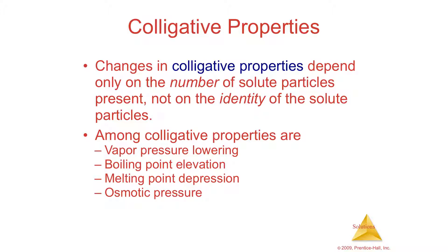So vapor pressure lowers when you add a non-volatile solute. Boiling point raises up — it actually boils at hotter than the normal boiling point — and it freezes lower than the normal freezing point. The other thing that happens deals with osmosis. You'll see osmosis mostly in biology — that's how water comes in and out of cells, whether your cells are receiving water and food from your bloodstream, or whether water goes into a plant from the soil. All of that deals with something called osmosis, which involves a membrane.